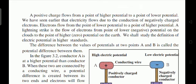Lightning strike is the flow of electrons from a point of lower (negative) potential on the cloud to a point of higher potential on the earth. We shall study the precise definition of electric potential in a higher standard.